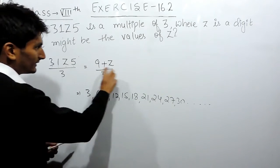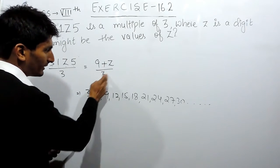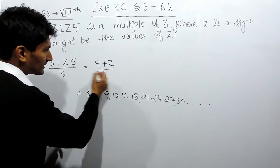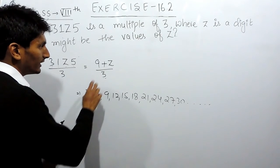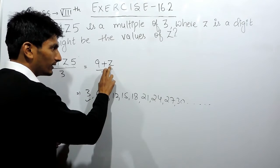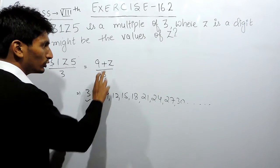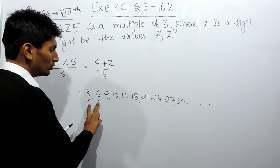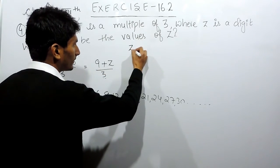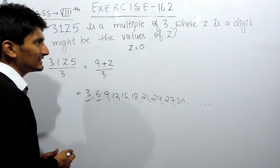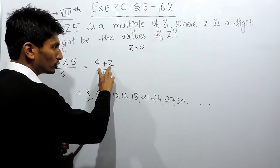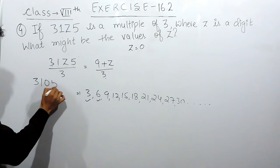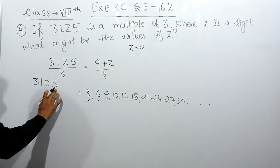Now, I have to make this sum equal to one of these numbers, then only this sum will be divisible by 3. First of all, I can't make this sum as 3 or 6, because if I add even 0 here, 9 plus 0 will be 9, not 3 or 6. So, the least value I can add to 9 is 0. The first value of z could be 0; in that case 9 plus 0 equals 9, which is divisible by 3. So the first number which must be divisible by 3 is 3 1 0 5.